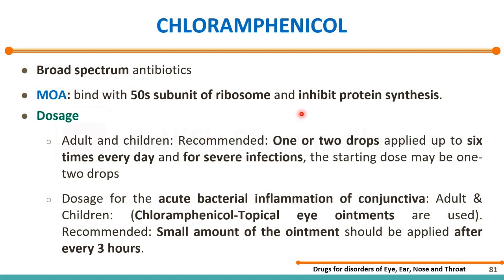When using eye drops, the usual dose is 1 to 2 drops every 6 hours. For severe infections using eye ointment, it is used for bacterial inflammation such as conjunctivitis. A sufficient small amount is applied, and the size of eye and conjunctival infections will differ between patients, applied every 3 hours.